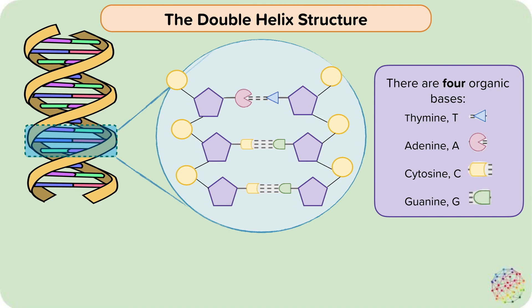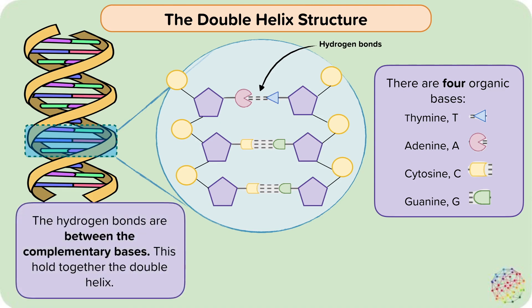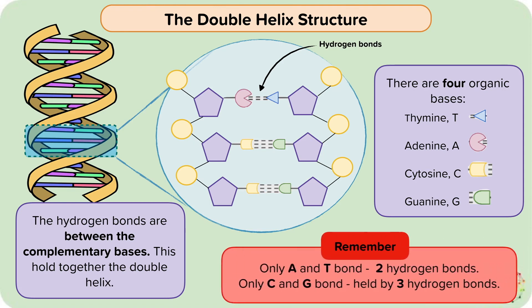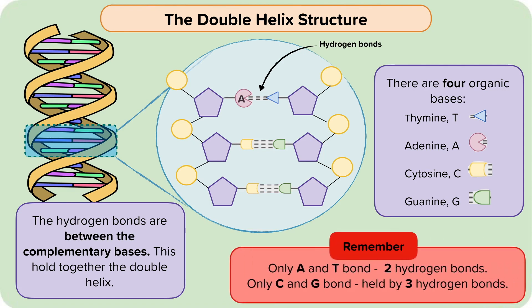The dotted line between the bases, in the centre of the strand, represents hydrogen bonds holding the two strands together between the bases. The key to the structure and functioning of the DNA molecule is the way that these bases join up in a complementary fashion. So in complementary strands of DNA, an A is always linked to a T via two hydrogen bonds.